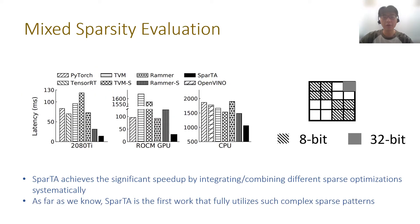We also evaluate the end-to-end performance of SPARTA under mixed sparsity patterns. The right figure shows an example of a mixed sparsity pattern comprising a quantized block sparsity pattern and a fine-grained sparsity pattern. SPARTA outperformed all baselines significantly, because SPARTA can better leverage sparsity by transforming the mixed pattern into several simpler ones. In addition, as far as we know, SPARTA is the first work that can optimize such complex sparsity patterns.